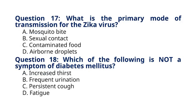Question 17: What is the primary mode of transmission for the Zika virus? A. Mosquito bite, B. Sexual contact, C. Contaminated food, D. Airborne droplets. The correct answer is option A, Mosquito bite. Explanation: The Zika virus is primarily transmitted through the bite of infected Aedes mosquitoes, which can also spread the virus through sexual contact and from mother to child during pregnancy.